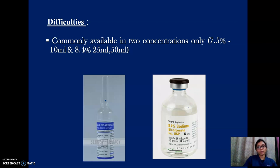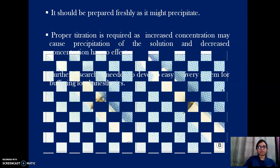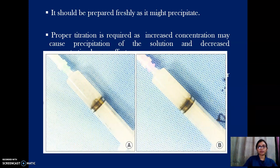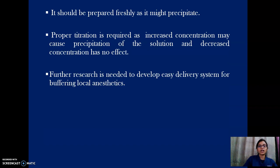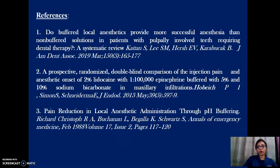Common difficulties encountered include the availability of sodium bicarbonate only in two concentrations: 7.5% weight by volume in 10 ml vials, and 8.4% weight by volume in 25 ml or 50 ml ampoules. It must be prepared freshly as it may precipitate. Proper titration is required; increased concentration leads to cloudy appearance and precipitation, while decreased concentration has no effect. Further research is needed for easy delivery systems, such as the OnPharma onset mixing pen, which is more commonly used abroad than in India. In the golden era of dentistry, solutions like buffered local anesthetics and advanced techniques like OnPharma are essential to excel in evolving dentistry.